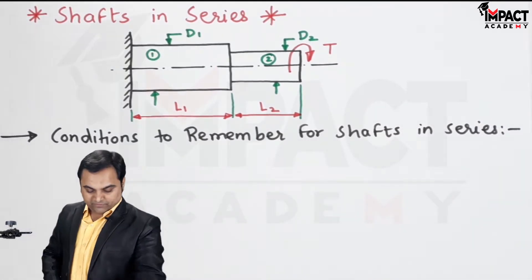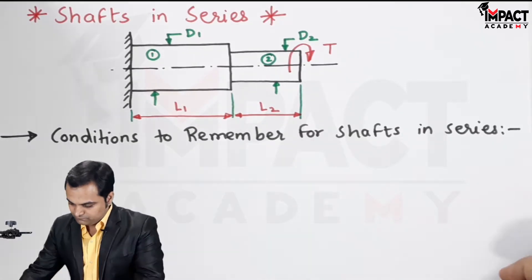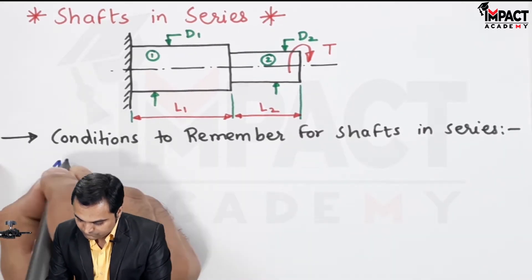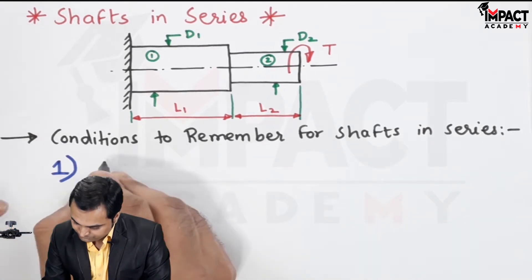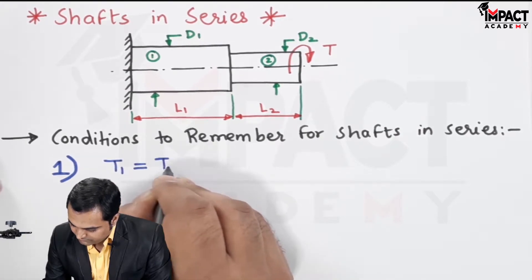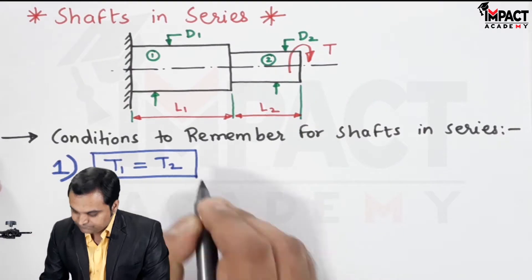The conditions to remember for shafts in series are: number one, the torque is equal for both the shafts.